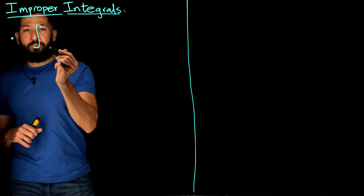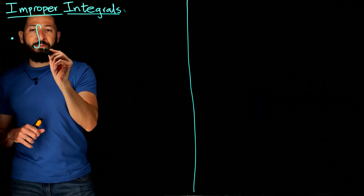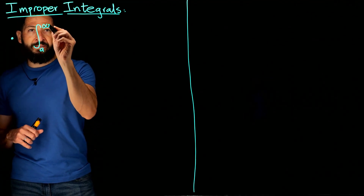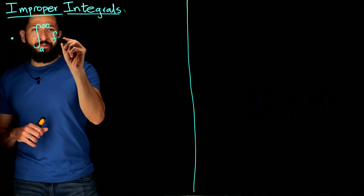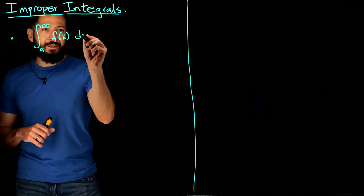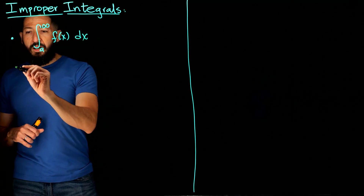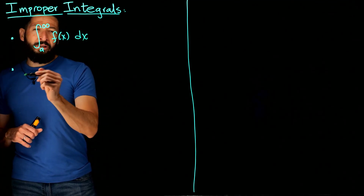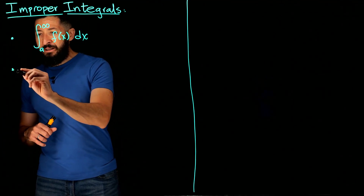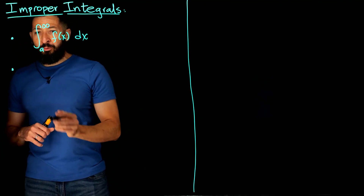One type will be whenever you have something of the form A to infinity of a function. Or negative infinity to a constant as well.